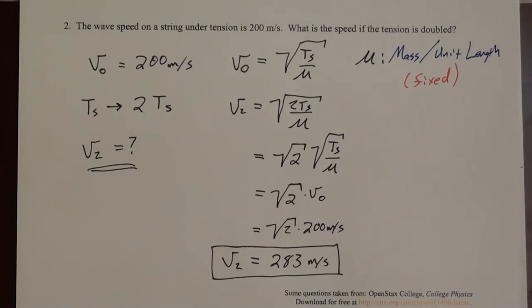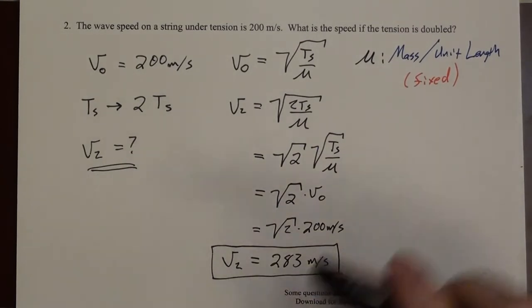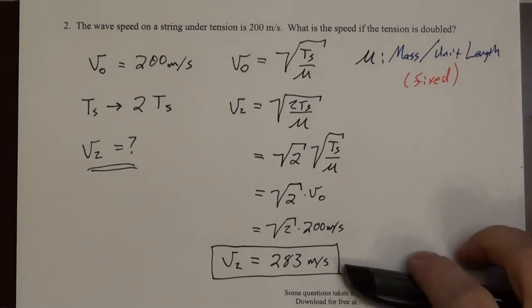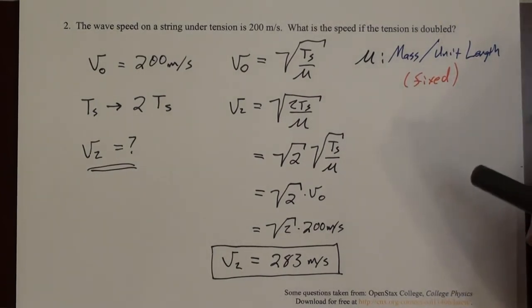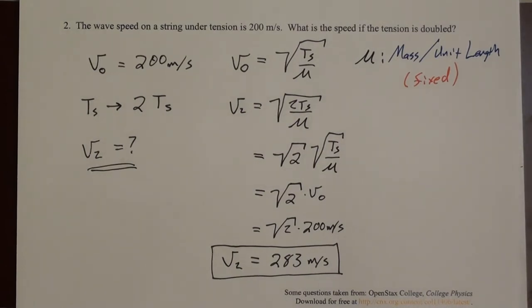All right, so there are two things I want to notice about this. One is that increasing the tension increased the velocity, and that kind of makes instinct sense. It kind of makes sense that if the string is more tense, the wave is going to travel faster. And the other is that doubling the tension did not double the speed, which might be your instinct. But in this case, that's just not the way the variables are related. So we just have to be careful not to make those kinds of assumptions and to really track through the math.